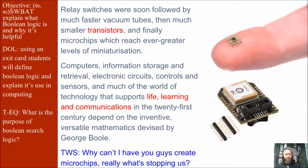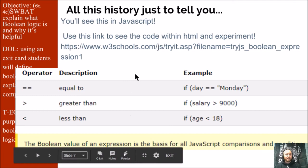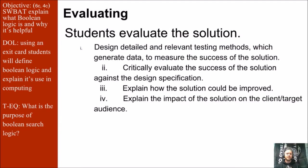My Think-Write-Share here is: why can't I have you guys create microchips — what's stopping us? I told you all this history just to say that you'll see some of this in JavaScript once we start that unit. If you can't wait to get started, go ahead and follow this link. You'll see the use of AND and OR gates inside the code itself. The Boolean value of an expression is the basis for all JavaScript comparisons and conditions. So let's get to the end of the unit project.